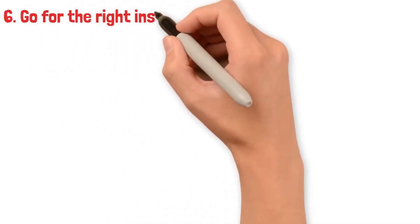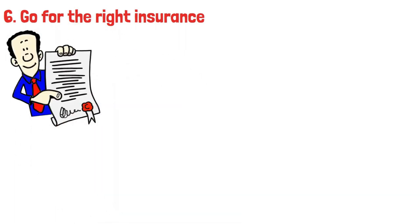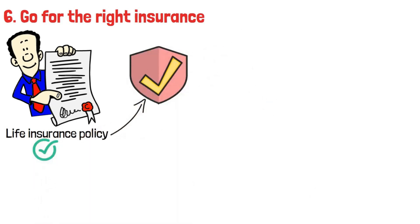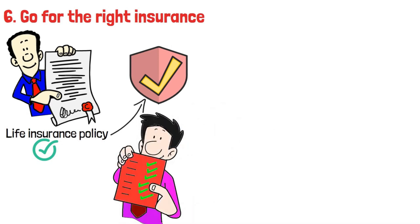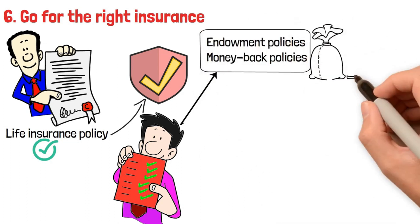6. Go for the right insurance. A life insurance policy is a necessary investment for everyone to offer financial security to their family against the uncertainties of life. Choose the right sort of life insurance. There are various sorts of life insurance policies on the market that cater to people's multiple demands. Endowment policies and money-back policies can be excellent investments for wealth creation.